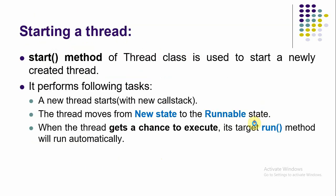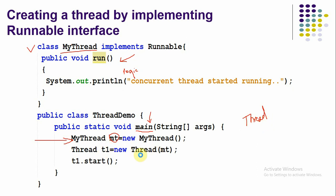A thread is actually created using the predefined Thread class. We pass the object that implements Runnable into the Thread constructor: Thread t1 = new Thread(task). This way, t1 knows which run() function to call — it knows which task should be executed when it runs. Then we call t1.start() to start the thread, which moves it from the new state to the runnable state.